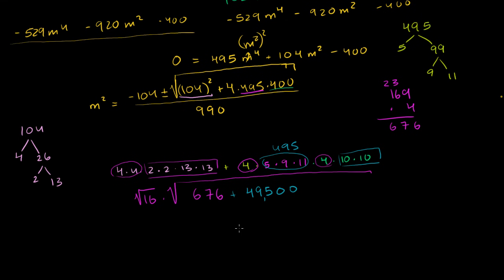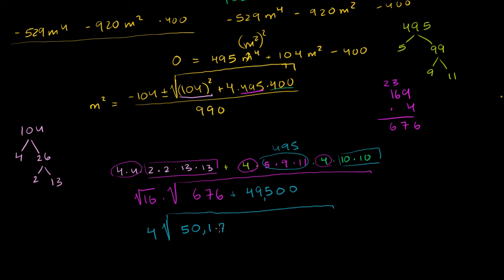So this is going to become: square root of 16 is 4, times the square root of 49,500 plus 676, which is going to be 50,176. So we need the square root of 4 times the square root of that crazy number 50,176.